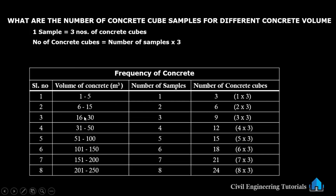Next, if the volume of concrete is between 16 and 30 cubic meters, then you have to take three numbers of samples. Three samples gives nine numbers of concrete cubes. For a volume between 31 and 50 cubic meters, the number of samples you have to take is four, and the number of concrete cubes will be 12, since four multiplied by three equals 12.